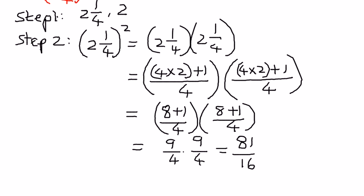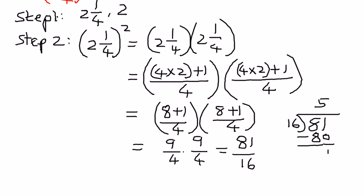Now, this is an improper fraction. Whenever the numerator is larger than the denominator, those types of fractions are called improper fractions. We can represent this improper fraction as a mixed number. Let us take 81 and divide it by 16, following long division. 16 times 5 is 80, and when we subtract 80 from 81, we are left with 1. Therefore, the remainder is 1, and 81 divided by 16 equals 5 and 1 over 16. That is our answer.